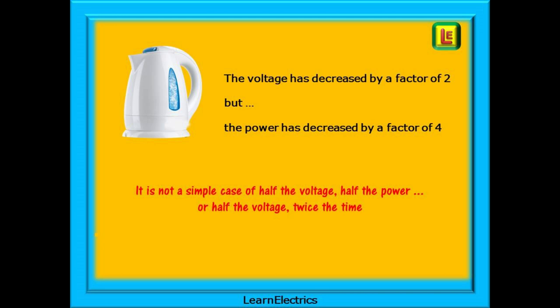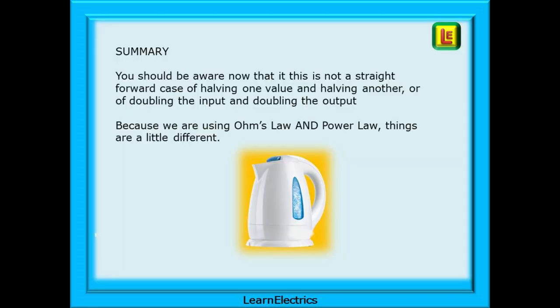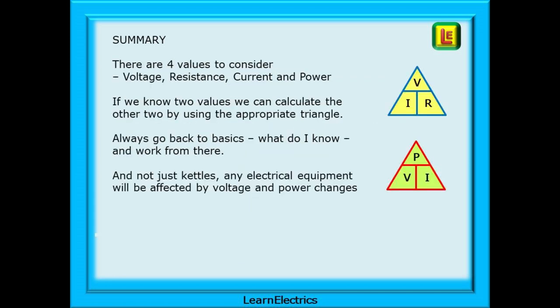It is not a simple case of half the voltage equals half the power or half the voltage equals twice the time. Because we are using Ohm's Law and Power Law together, things are a little different. There are four values to consider: voltage, resistance, current, and power. If we know two values we can calculate the other two. When calculating, always go back to basics — ask yourself what you already know and work from there. These rules apply to any electrical equipment.